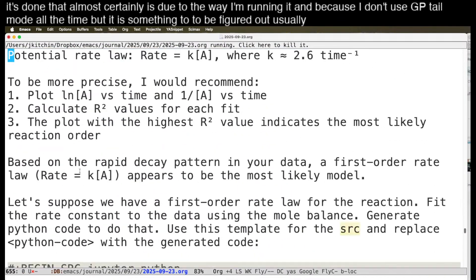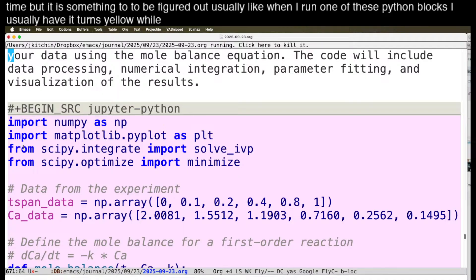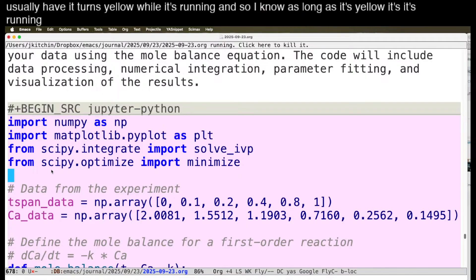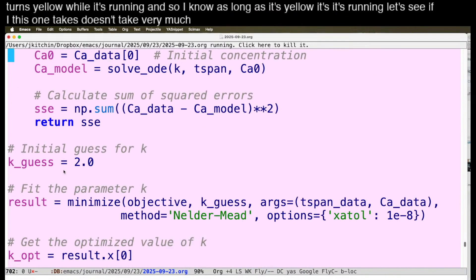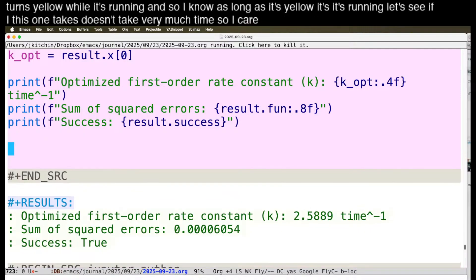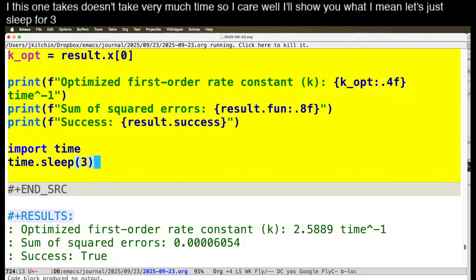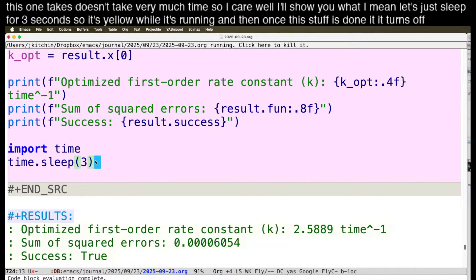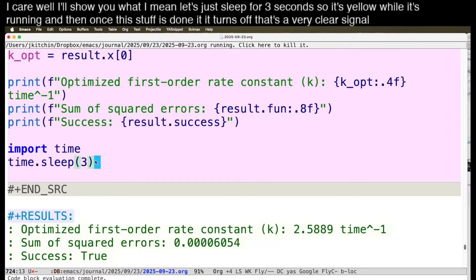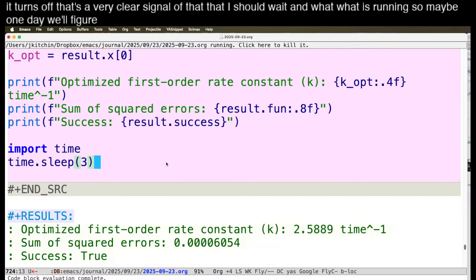Usually like when I run one of these python blocks I usually have it turns yellow while it's running and so I know as long as it's yellow it's running. Let's see if I this one takes doesn't take very much time so like here we'll I'll show you what I mean. Let's just sleep for three seconds so it's yellow while it's running and then once this is done it turns off. That's a very clear signal that I should wait. And what is running. So maybe one day we'll figure out something like that.